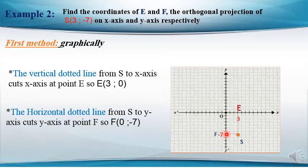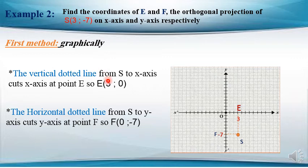To find the orthogonal projection of S on the y-axis, we draw a horizontal perpendicular line to the y-axis. Here is F, the orthogonal projection of S on the y-axis. Since it's on the y-axis, its abscissa is 0 and its ordinate is -7, so the coordinates of F are (0, -7). E has the same abscissa as S with ordinate 0, and F has the same ordinate as S with abscissa 0.